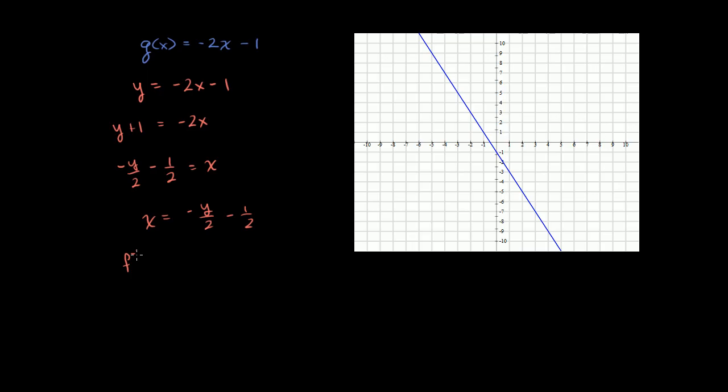Or we could write x is equal to negative y over 2 minus 1 half. Or we could write g inverse as a function of y is equal to negative y over 2 minus 1 half. Or we could just rename y as x. And we could say that g inverse of y is equal to negative y over 2 minus 1 half.